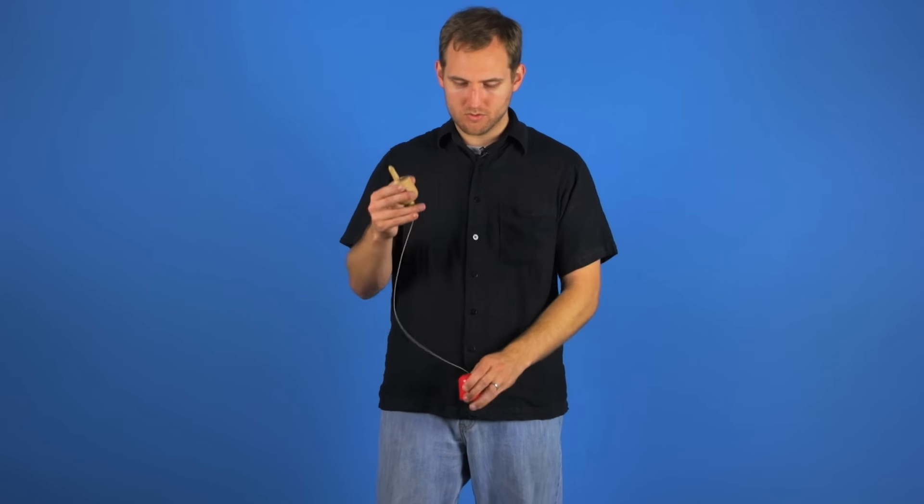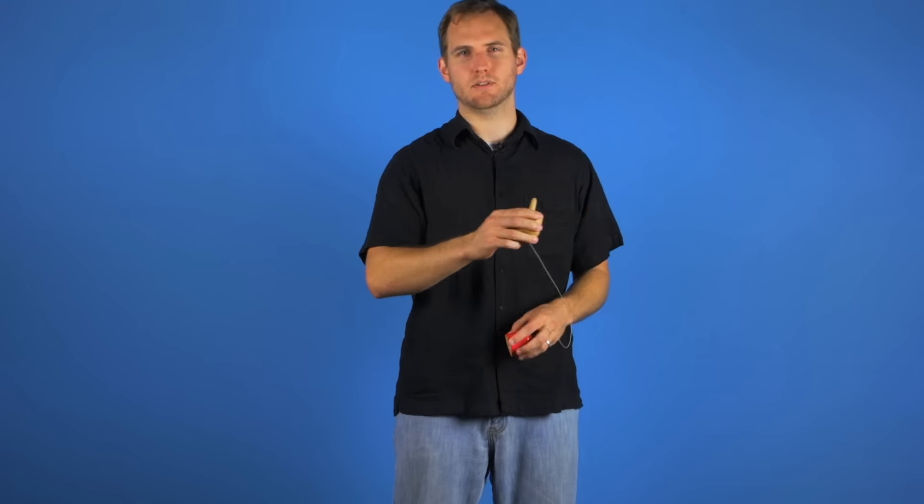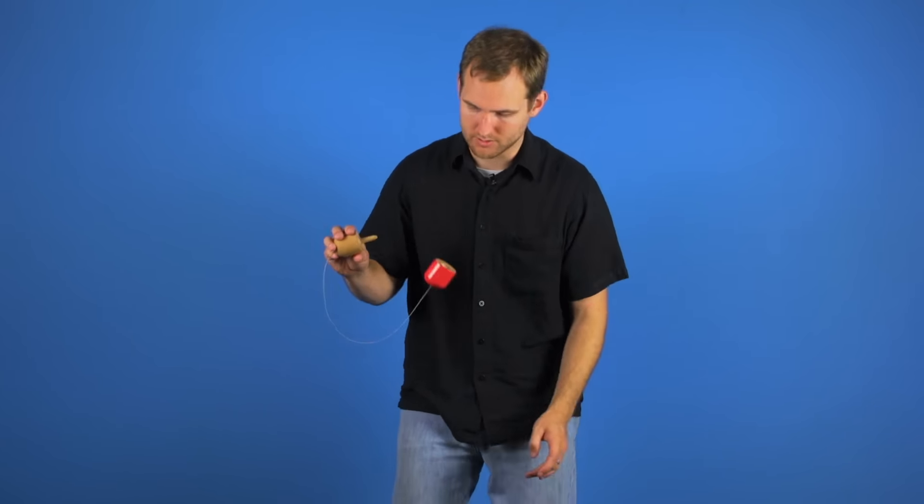That's really all there is to it. One other tip is you don't want to keep your hand too far away. That makes aiming the spike a little difficult, so try to keep it nice and close and that will make landing it easier.